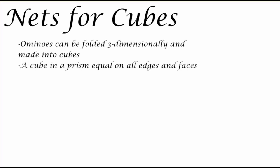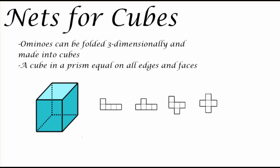Now ominoes can be folded three-dimensionally and made into cubes. Recall that a cube is a prism that's equal on all edges and faces. As shown here, a cube has six faces, its edges, and can be made from ominoes.